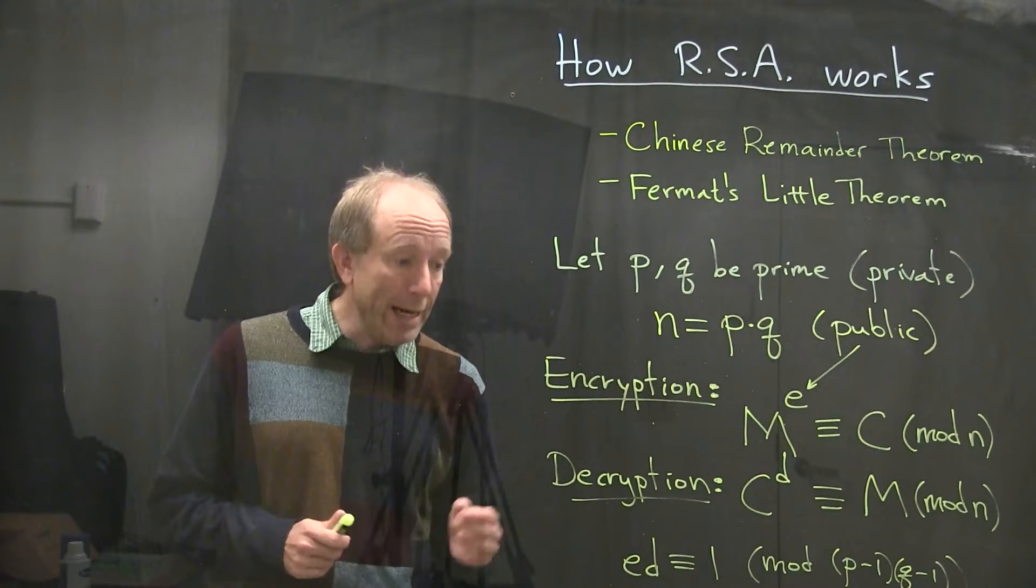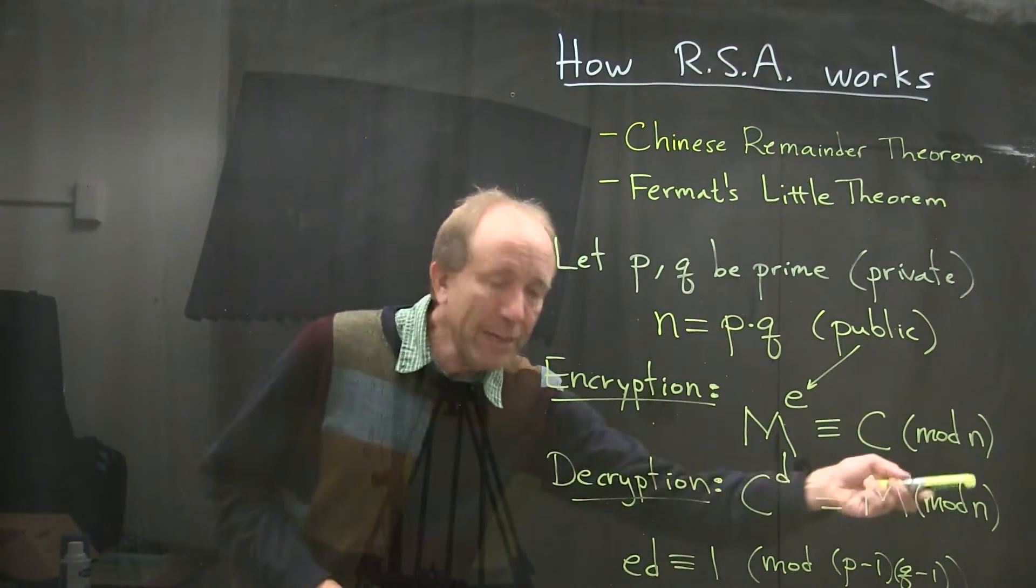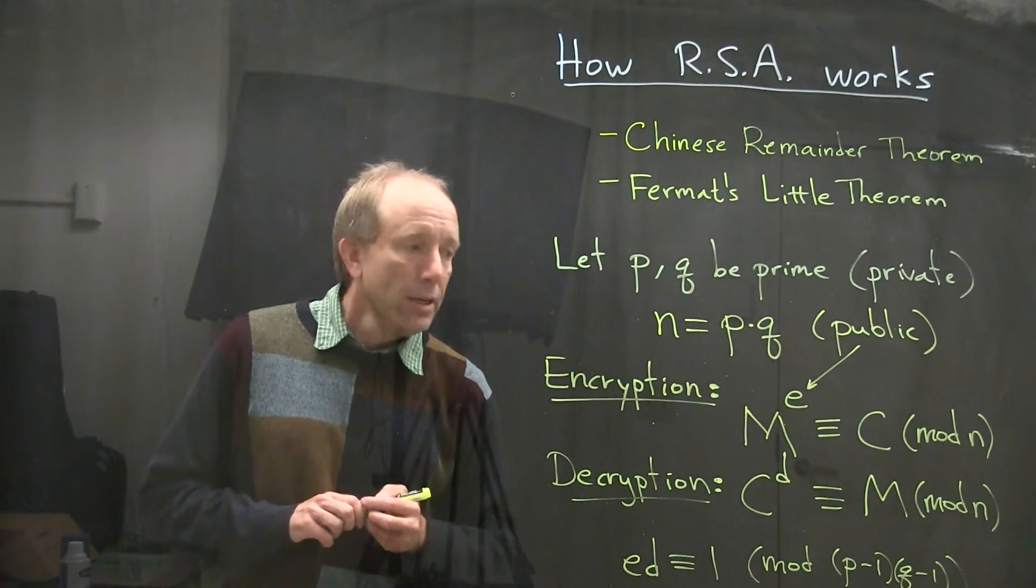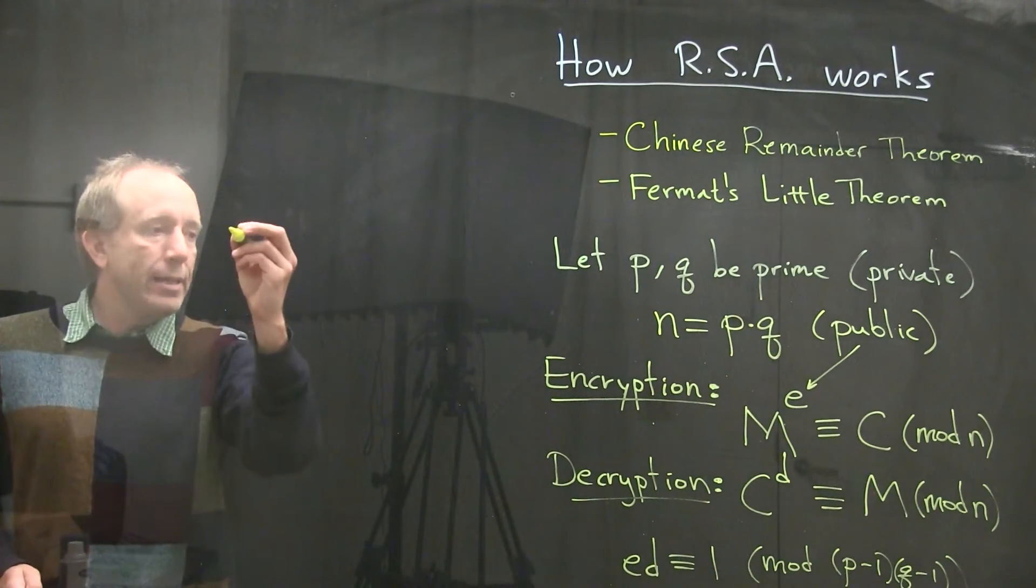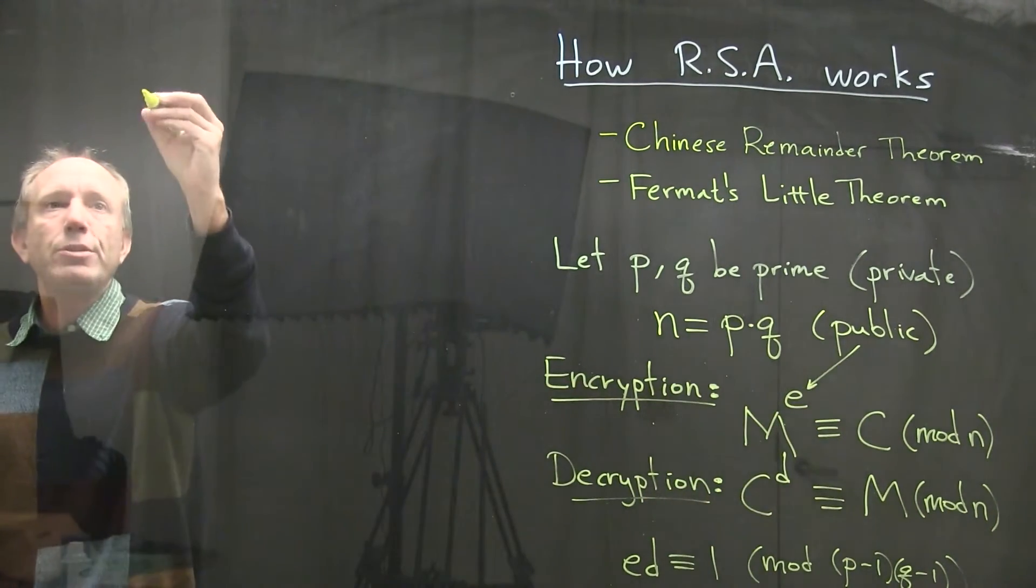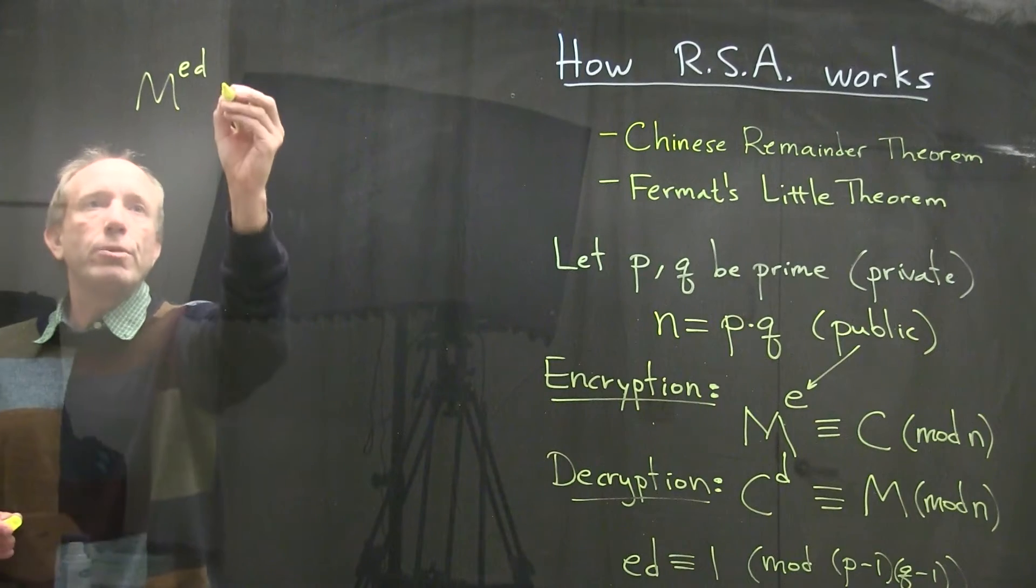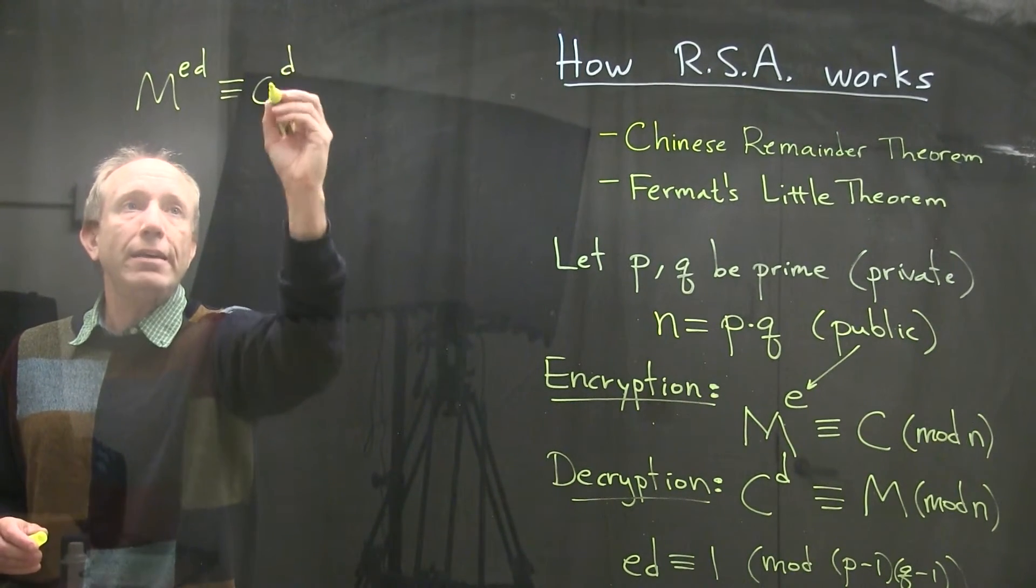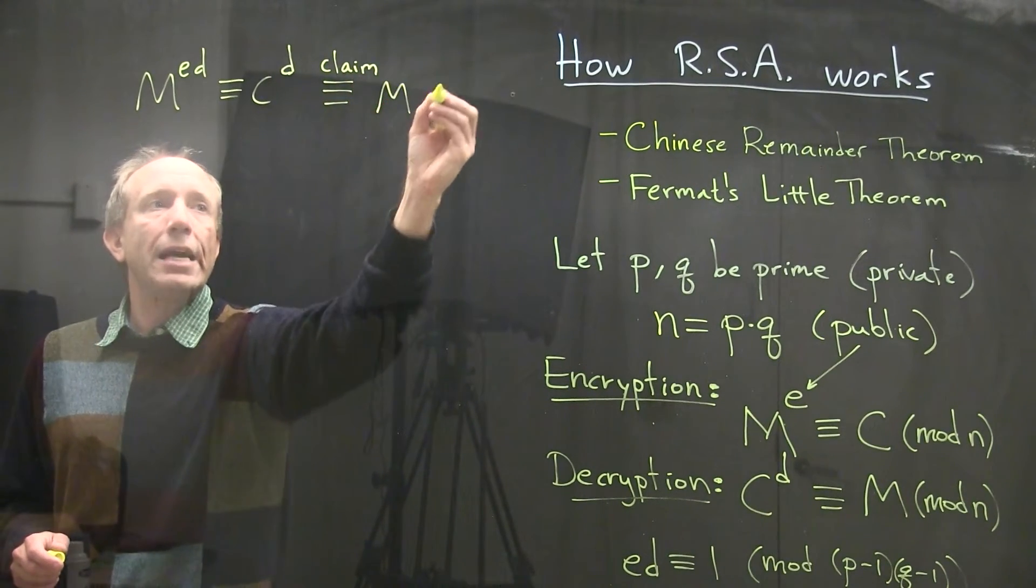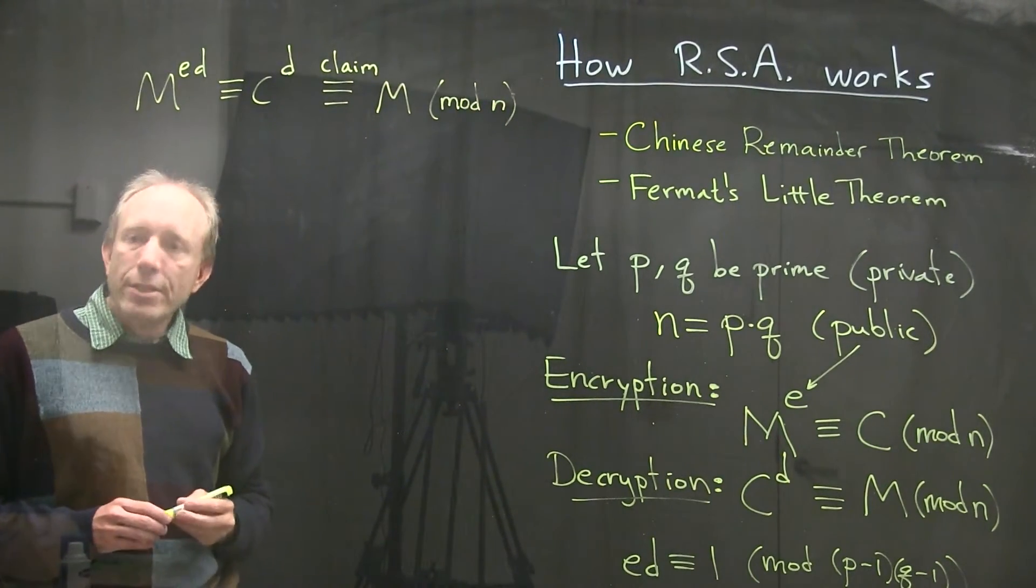So now I would like to show you why it is that with this information as a setup, that we actually decrypt messages correctly when we raise the ciphertext to the D power. So what we've already said is that M to the E is C and C to the D is M. So let's actually put these two things together. If I look at M to the ED, this is really C to the D. And I'm claiming here that that is actually congruent to M again in mod N. Why is this true?